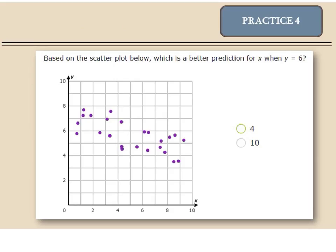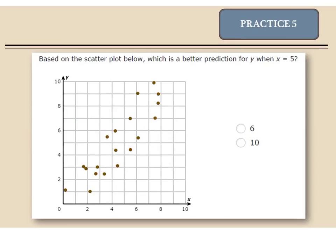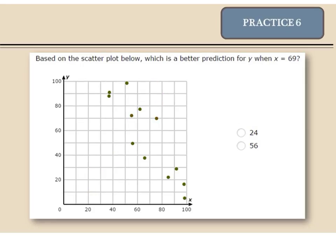Your practice 4. Based on this scatter plot, which is a better prediction for X when Y is 6? Is it 4 or 10? Practice 5. Which is a better prediction for Y when X is 5? Is it 6 or 10? And practice 6. Which is a better prediction for Y when X is 69? Is it 24 or 56?